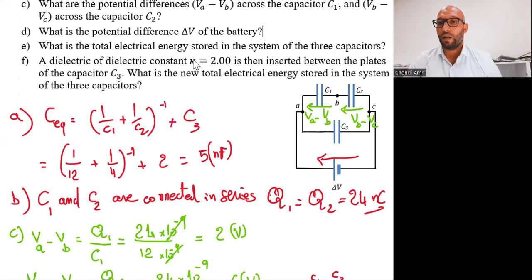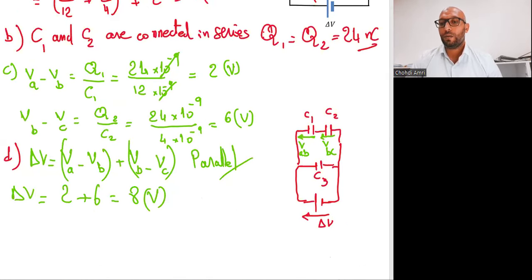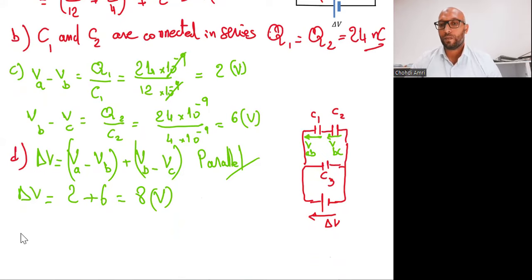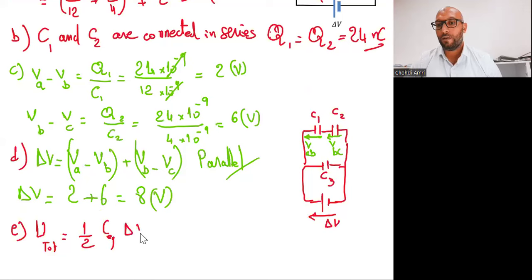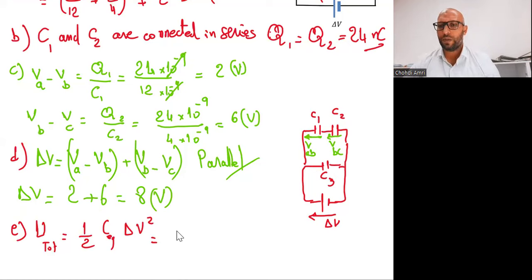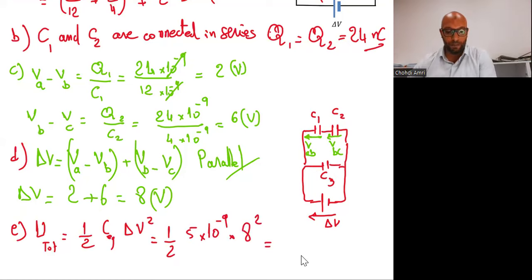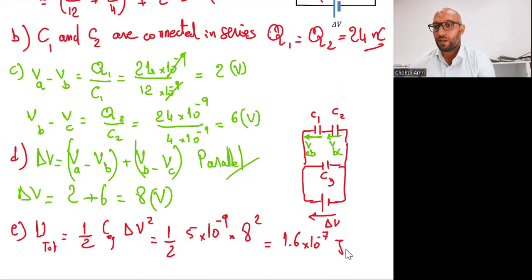Let's move to question E: what is the total energy stored in the system of the three capacitors? As you know, the energy stored is U total equals one half of C equivalent times delta V squared. C equivalent is 5 nanofarad, multiplied by delta V which is 8 squared. The result will be 1.6 times 10^(-7) joules. We are done.